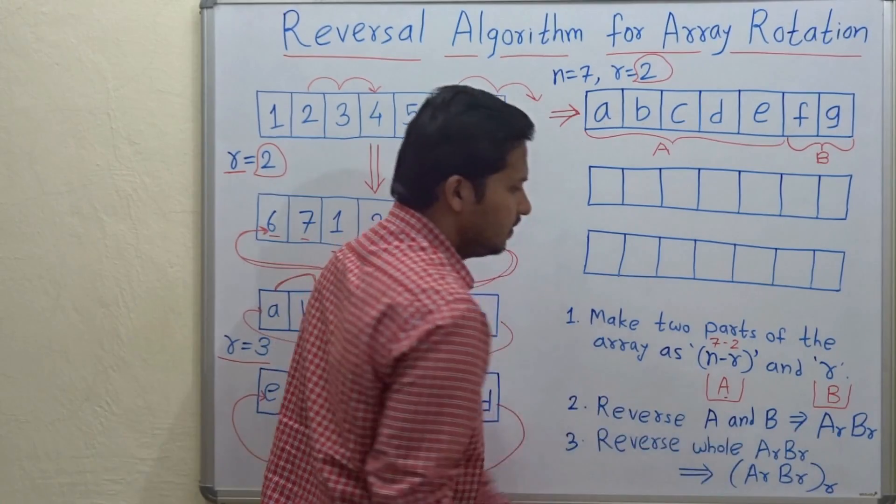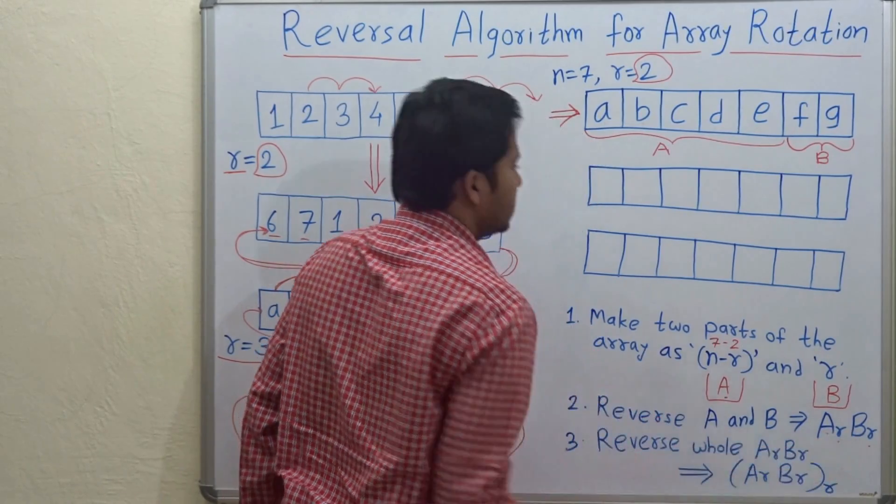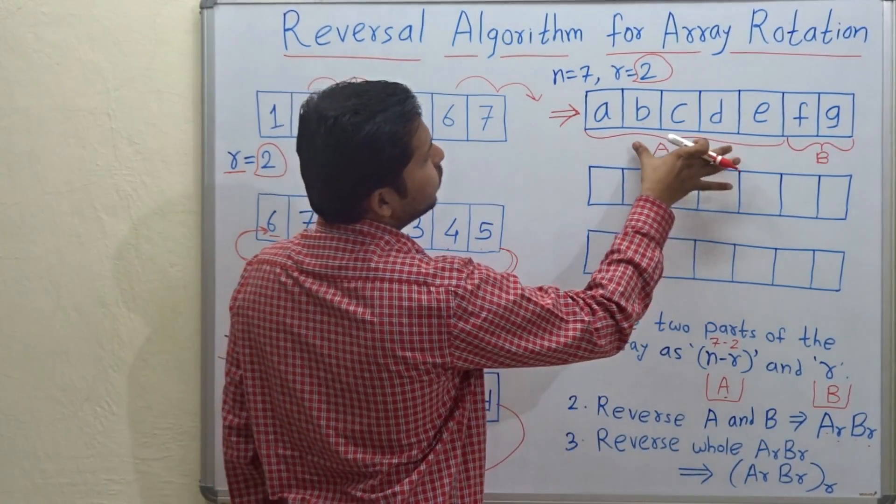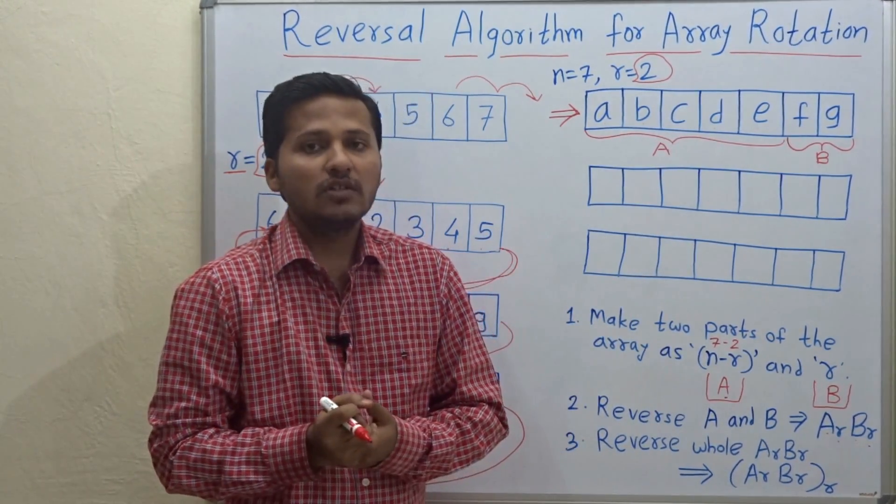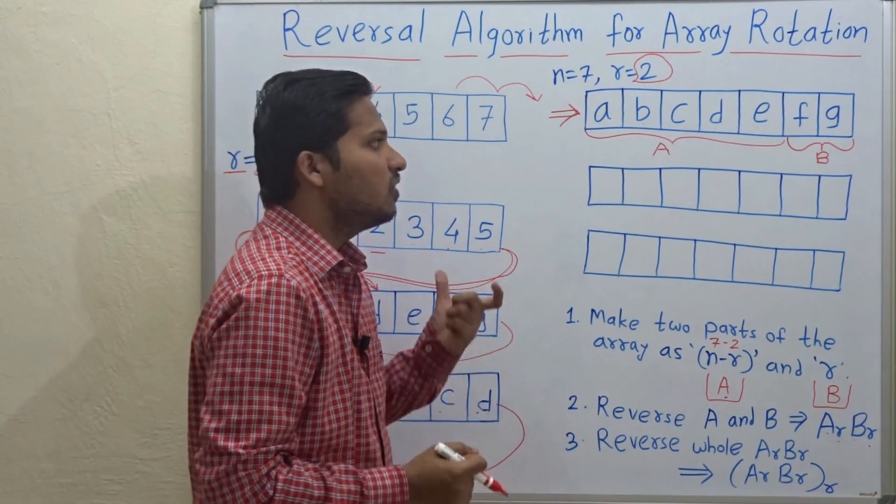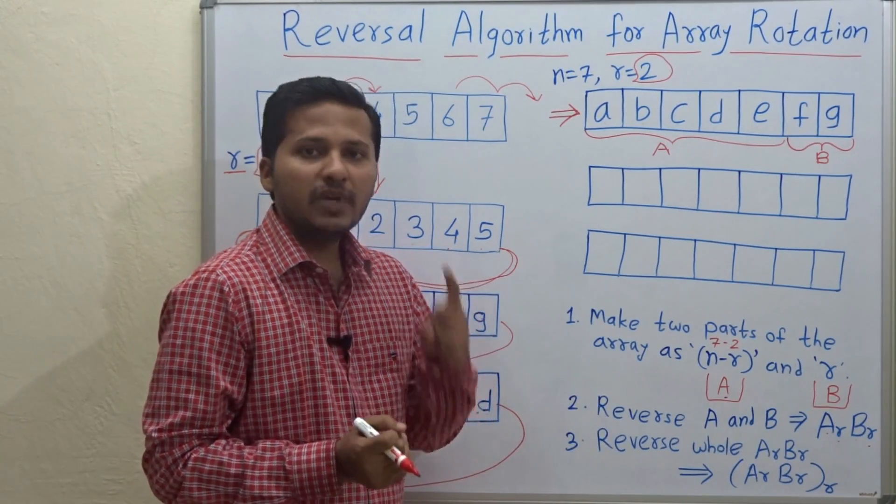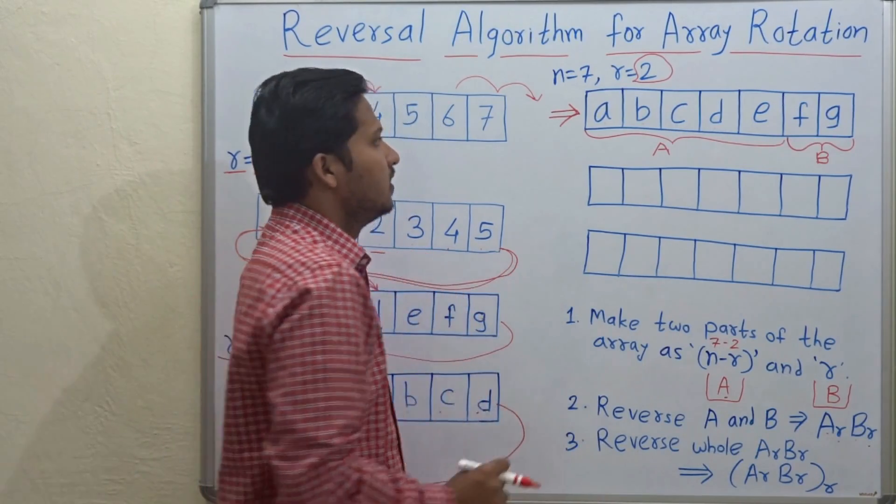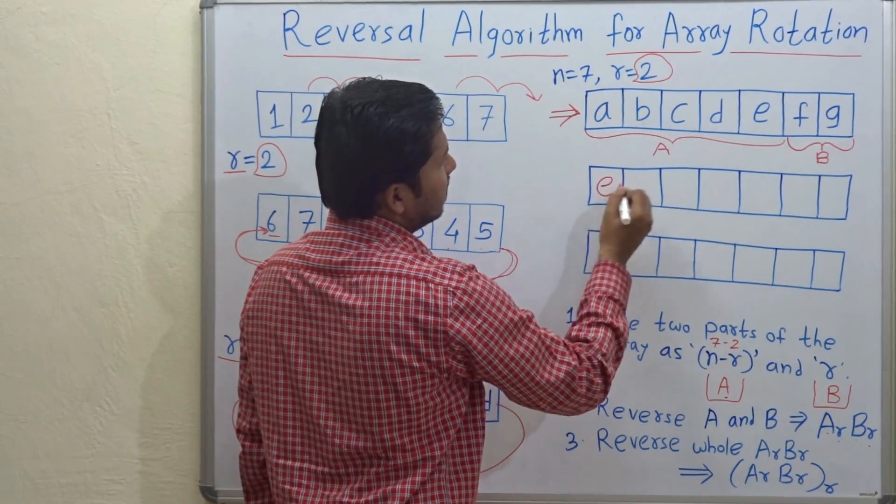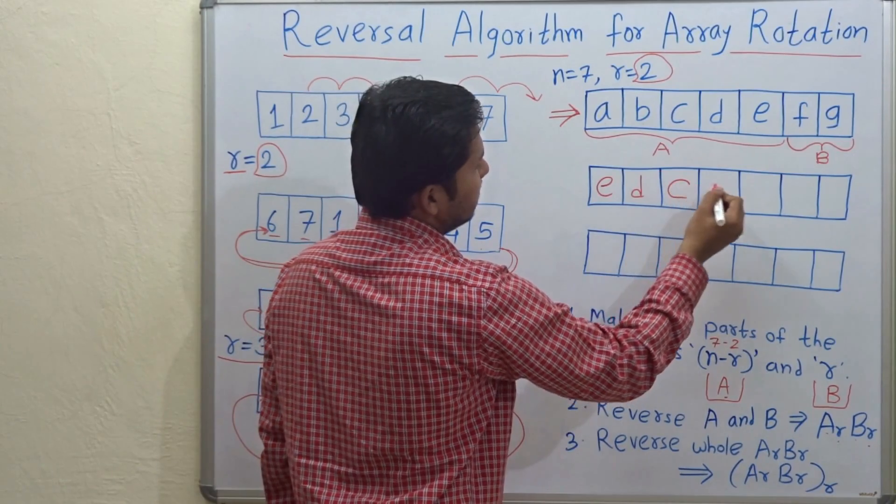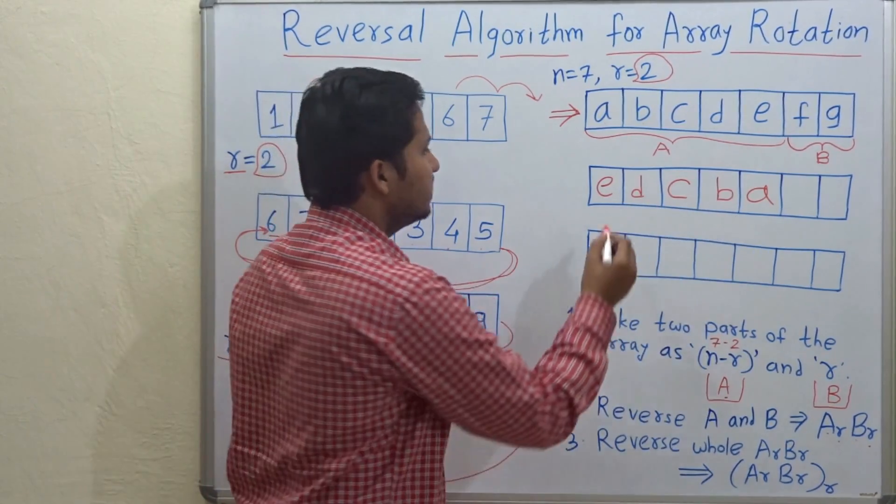Now let's go to the second step. Reverse A and B which will form AR BR, that is A reversed and B reversed. So see you have to reverse the first part that is A. On my channel I have a video on how to reverse an array without any extra space and in time complexity of N. I have mentioned the link in the description below. So you have to reverse this part. So I will reverse it: E, D, C, B and A. Okay. Yes. The first part is reversed.